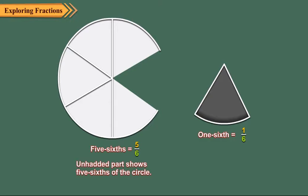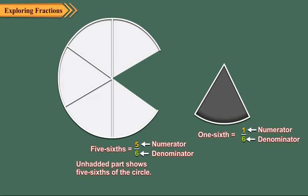In one upon six, one is called the numerator and six is called the denominator of the fraction one upon six. Similarly, in five upon six, five is the numerator and six is the denominator. Thus, the number of equal parts into which the whole has been divided represents the denominator. Out of these equal parts, the number of parts taken or considered shows the numerator.